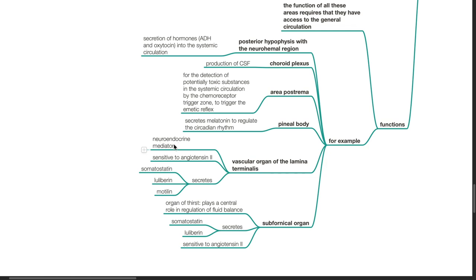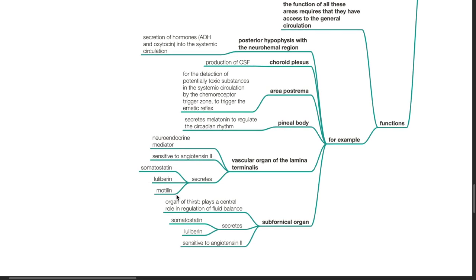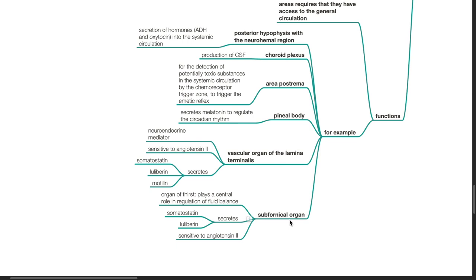Pineal body secretes melatonin to regulate the circadian rhythm. Vascular organ of the lamina terminalis serves as a neuroendocrine mediator. This organ is sensitive to angiotensin II. It secretes somatostatin, luliburin and motilin. The subfornical organ is the organ of thirst and plays a central role in regulation of fluid balance. It is also sensitive to angiotensin II and secretes somatostatin and luliburin.